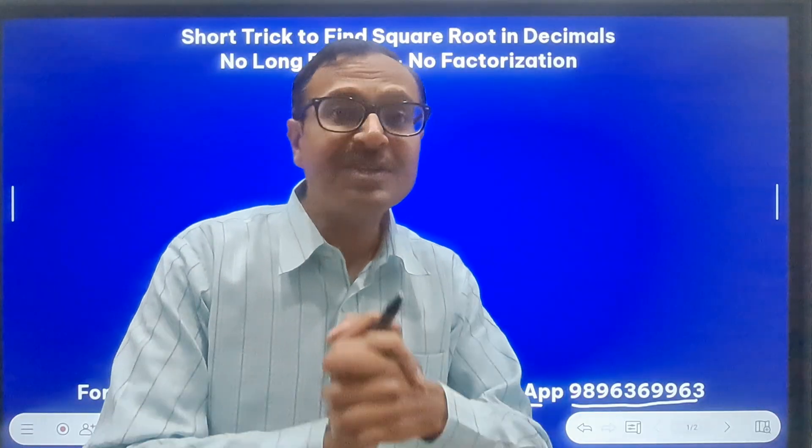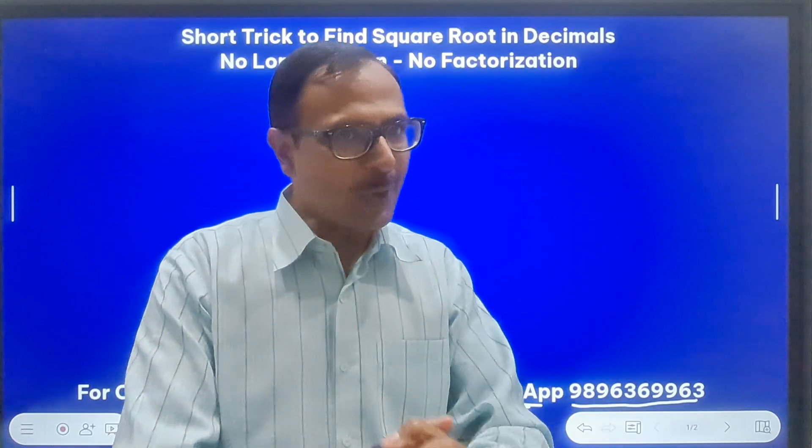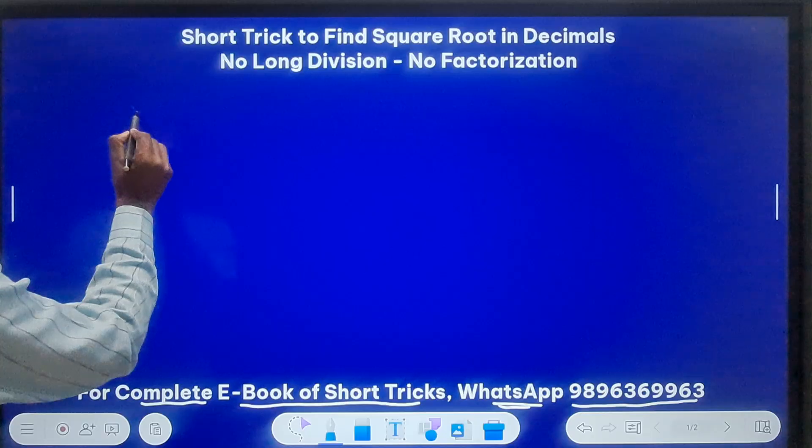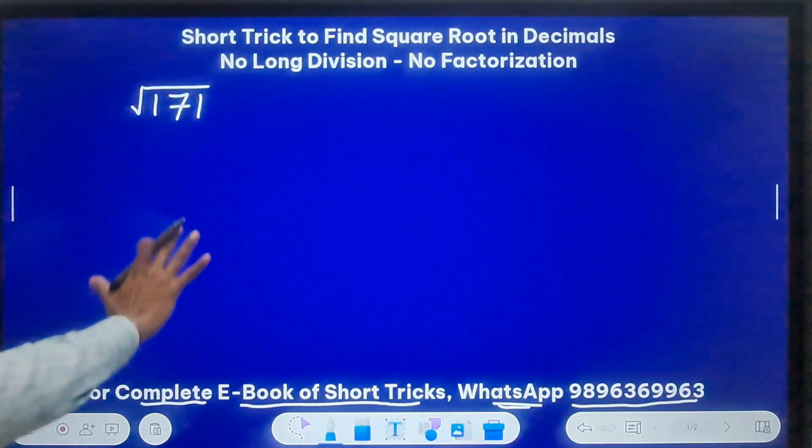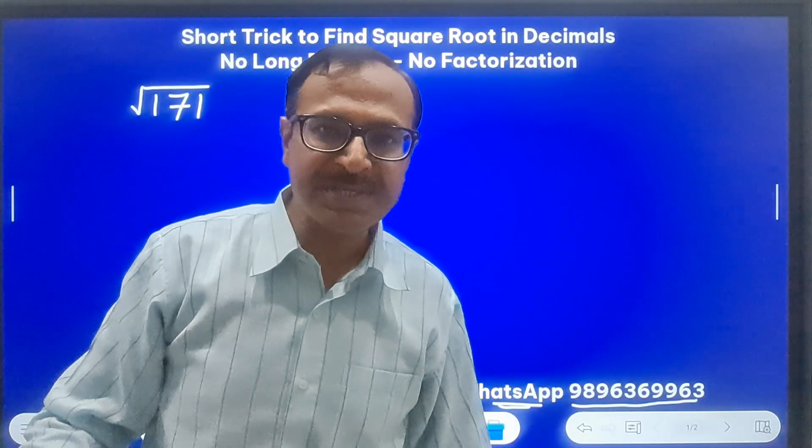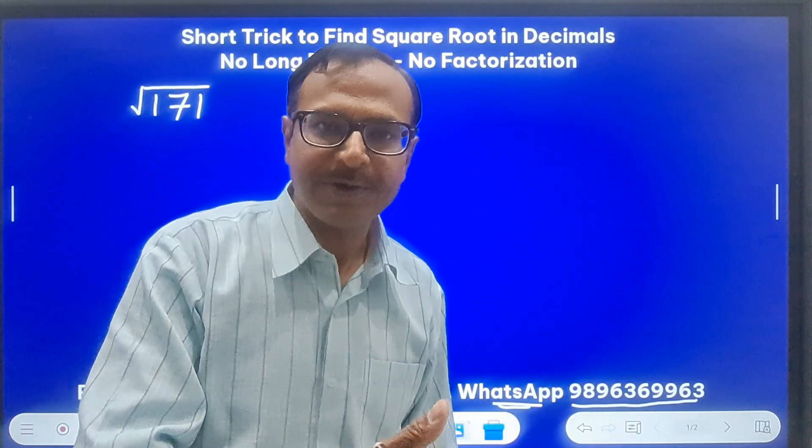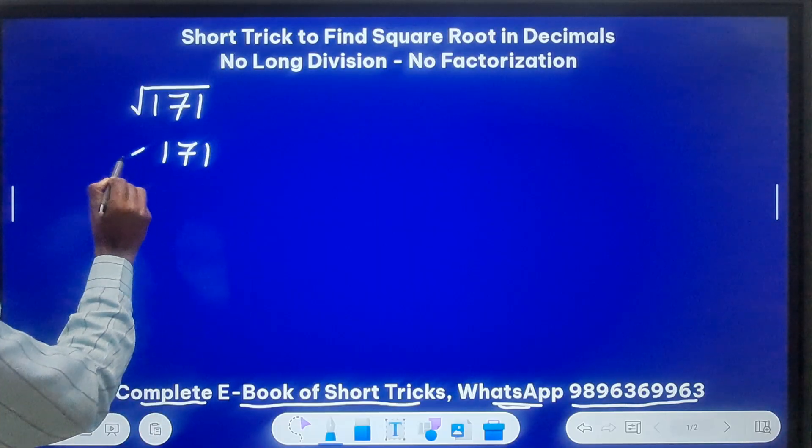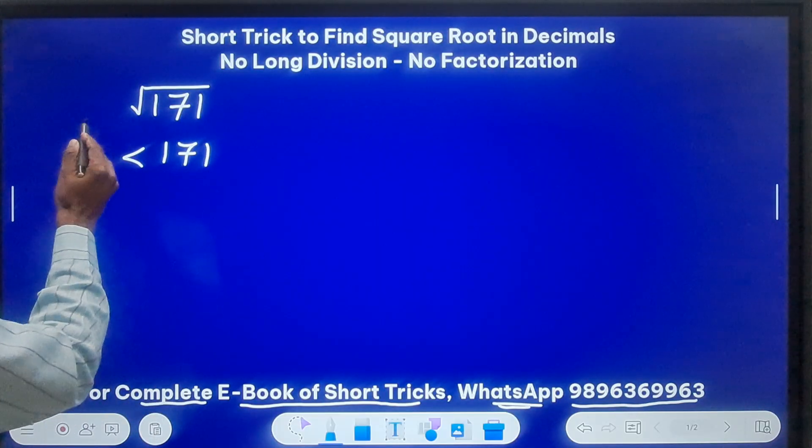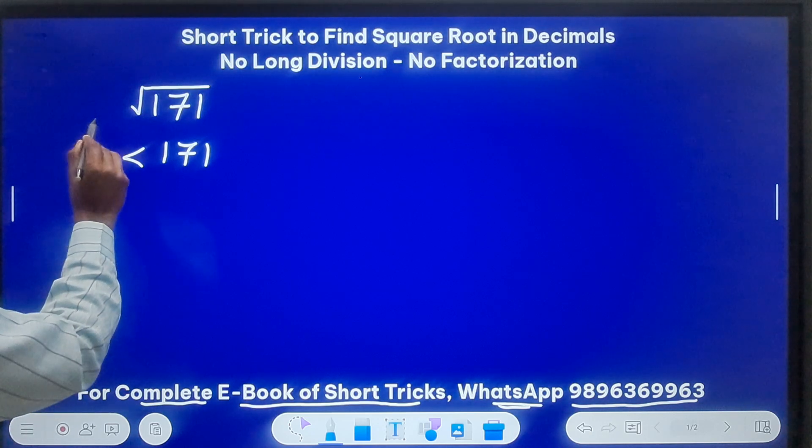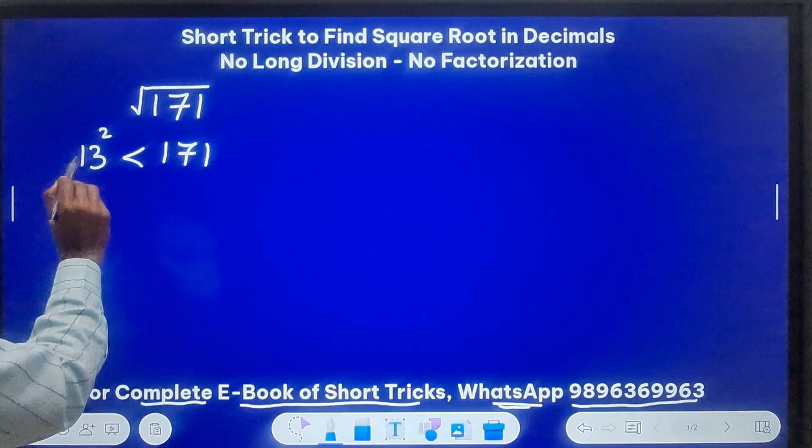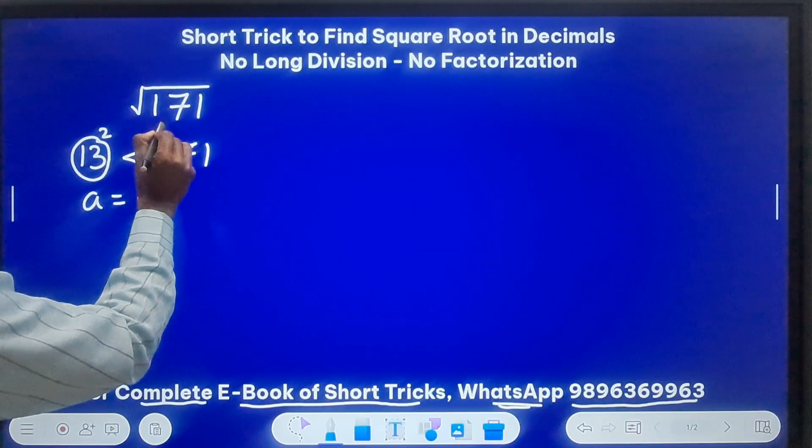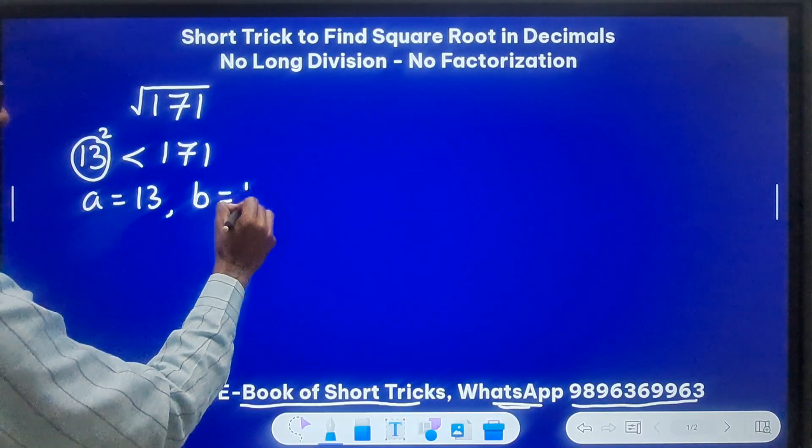So let's get going and learn this superb method of finding the square root of imperfect square numbers. The first example which I'm going to take up is square root of 171. Now first I'll write all the steps, and then in my second question I'm going to skip steps and you will see how quickly we can actually get to the correct answer. So square root of 171. Now if you see this number 171, it is greater than which square? 10 square is 100, 11 square is 121, 12 square is 144, 13 square is 169 - very close, right? So 13 square, just greater than 13 square. So this number 13 I'll assume it as small a, and the original number 171 I'll assume it as small b.